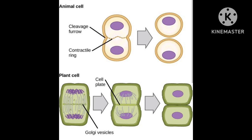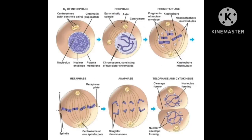Cytokinesis is different in animal and plant cells. In an animal cell, a constriction or contractile ring appears in the cytoplasm from outside and goes on increasing towards the inner side to divide the cytoplasm. On the other hand, in a plant cell, cytokinesis occurs with the appearance of a cell plate at the equatorial plane, which moves sideways to divide the cytoplasm. This diagram perfectly summarizes the process of mitosis.